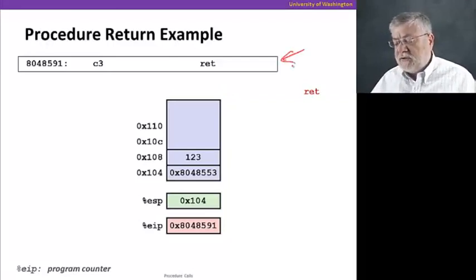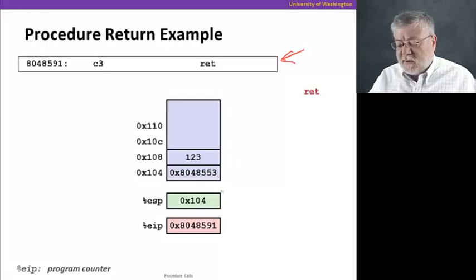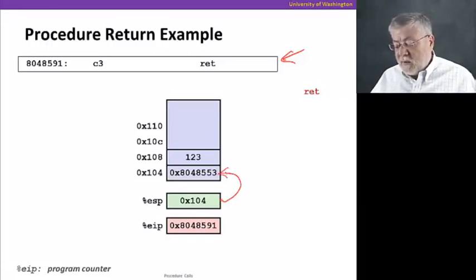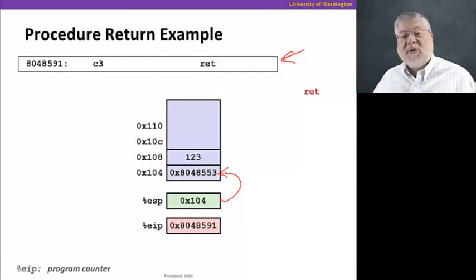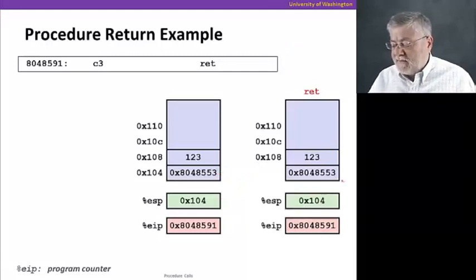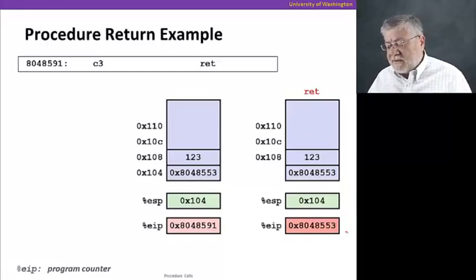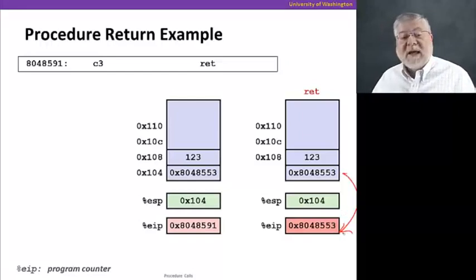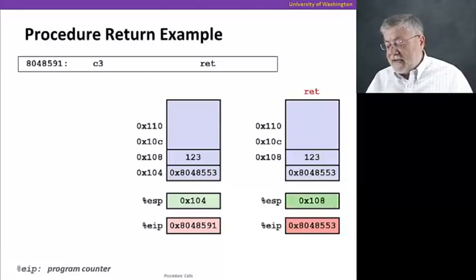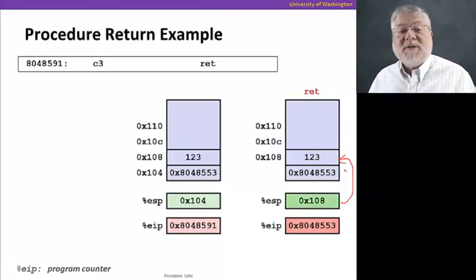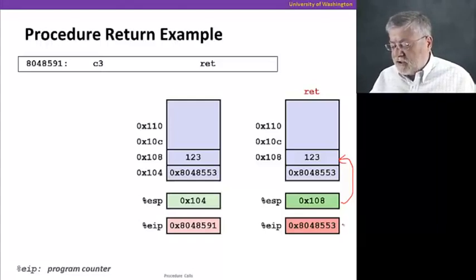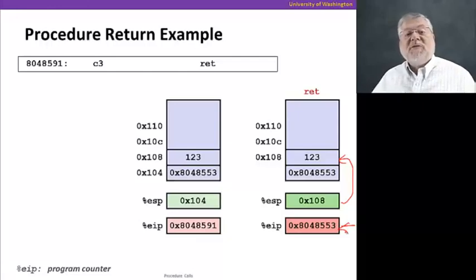Finally, we'll reach a return instruction at the end of the callee procedure. At that point, the stack will hopefully have returned to the same position, so the stack pointer is pointing to the return address we saved away. What we're going to do is pop that stack and get that value back so we can go to that location next. The return instruction pops this value from the stack and stores it into the instruction pointer. The stack pointer is then adjusted to 108, pointing back to where it pointed before we called the procedure. Our next instruction to execute is at that address — the push instruction following the call.